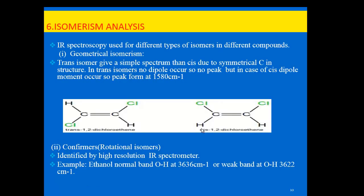The sixth application is isomerism analysis. IR spectroscopy can differentiate between cis and trans isomers (geometric isomers), because trans isomers typically have zero dipole moment and do not absorb in the IR region, while cis isomers do absorb — commonly giving absorption near 515–800 per centimeter.